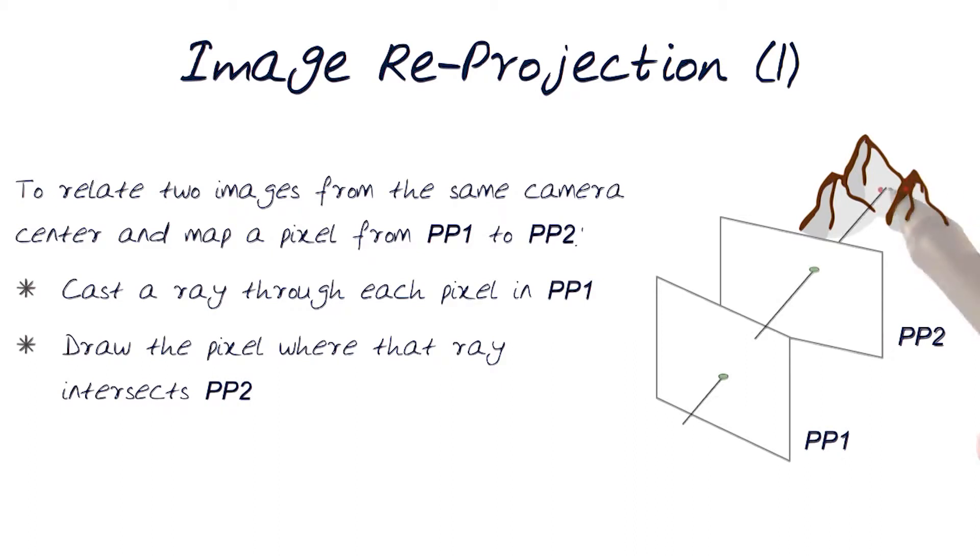So what that means is this point here, this is a ray of light, this is a point here in PP2, and of course this is a point in PP1.